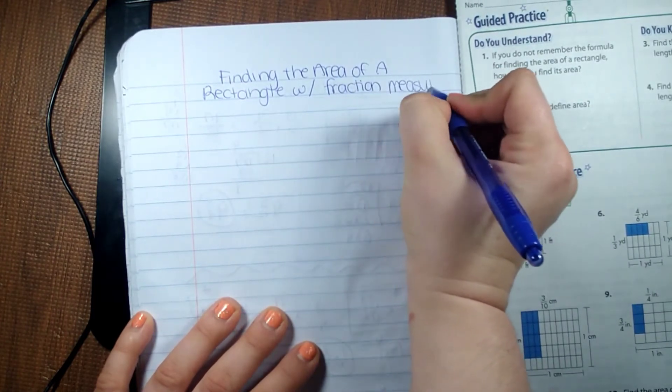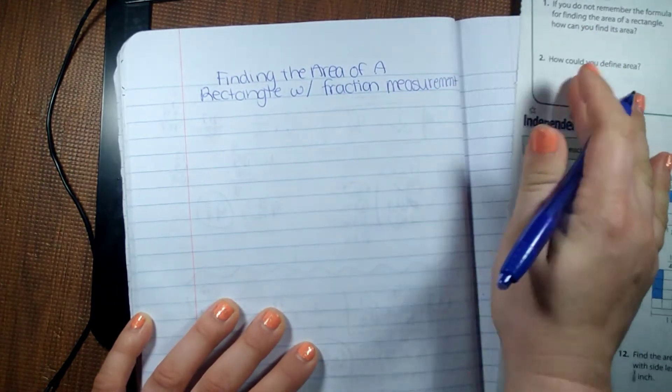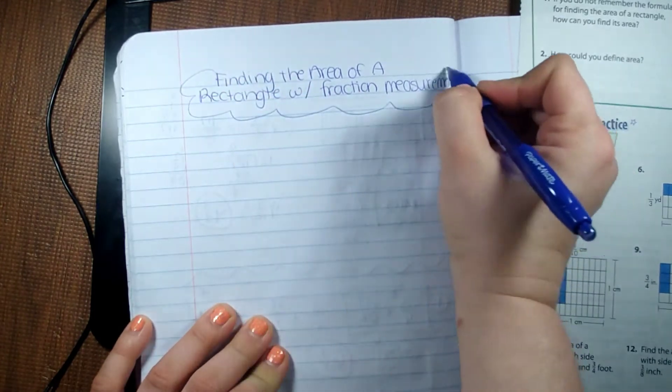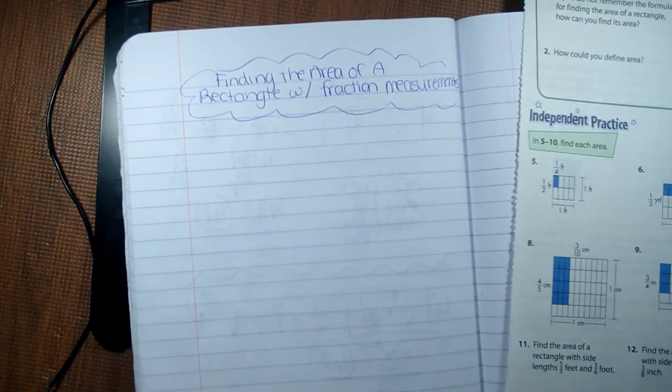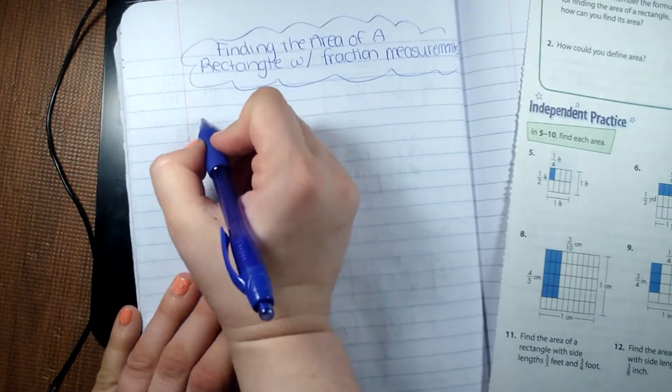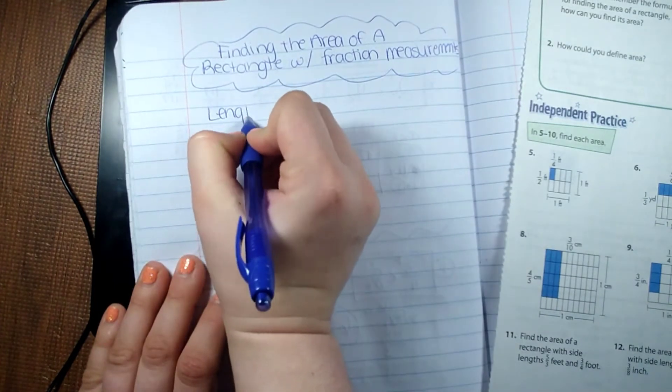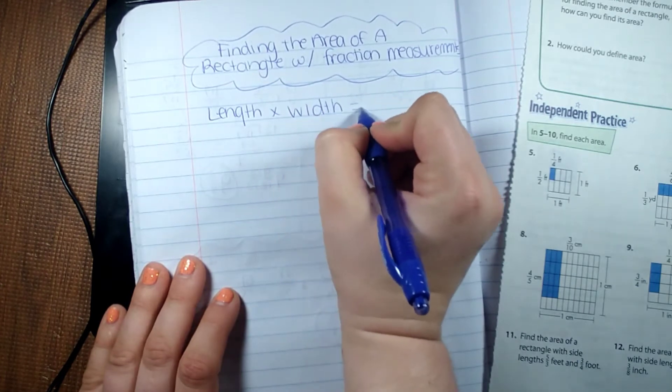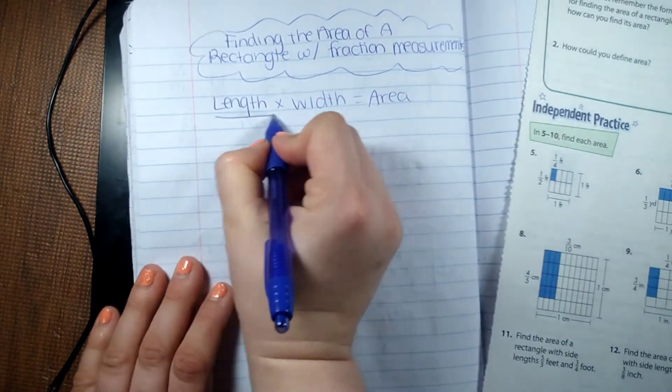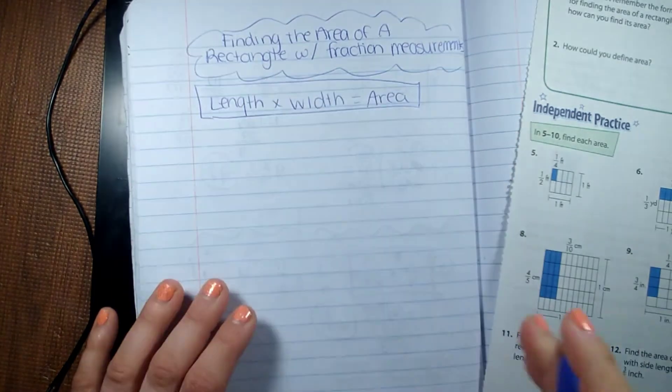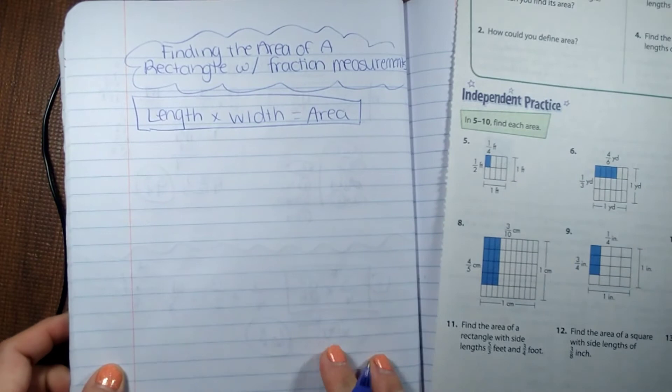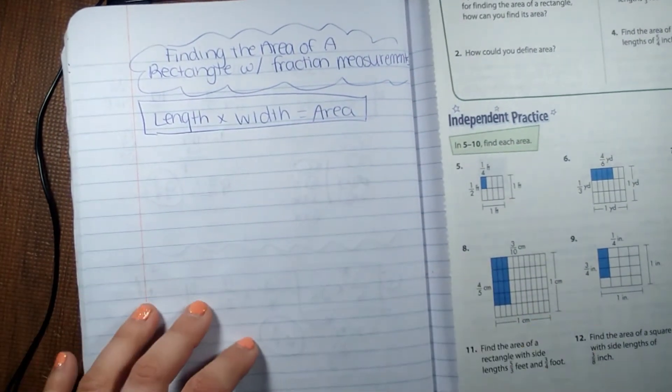So instead of having whole numbers on each side, each side has a fraction. So we're going to have to know how to multiply the fractions together to find the area, because length times width is how we find area. Now that's very important for you to know—you have to know how to multiply fractions in order to be able to find the area.